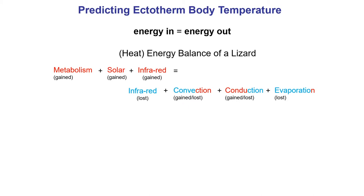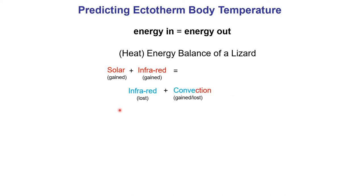We can simplify this down. In an animal like a lizard, metabolism is a very minor heat-producing term. The breathing rate is directly proportional to metabolic rate, and in most small organisms the heat produced by metabolism is roughly equal to the heat lost by respiratory water loss, so we can delete those terms. We can also drop conduction by imagining an animal sitting on its feet. That leaves solar and infrared radiation coming in, infrared being lost, and convection.